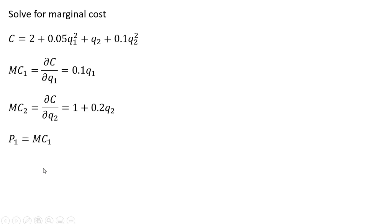Now setting our profit maximizing condition for Good 1. Setting the price of Good 1, which is $10, equal to the marginal cost. And now solving for Good 1. Dividing through by 0.1, 10 divided by 0.1 means the firm will produce 100 units of Good 1.